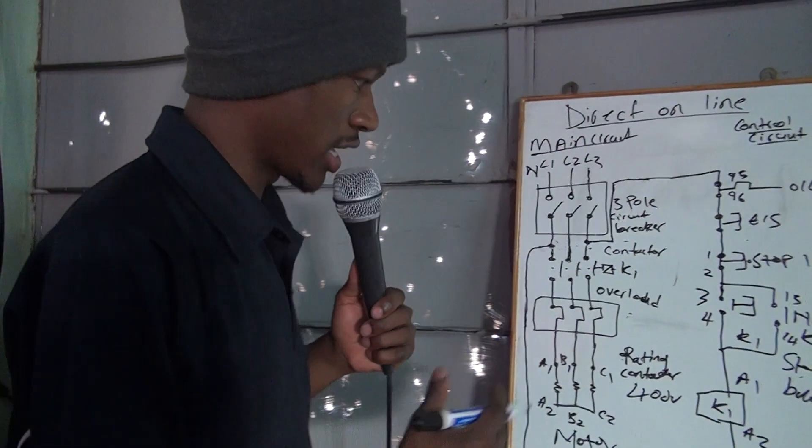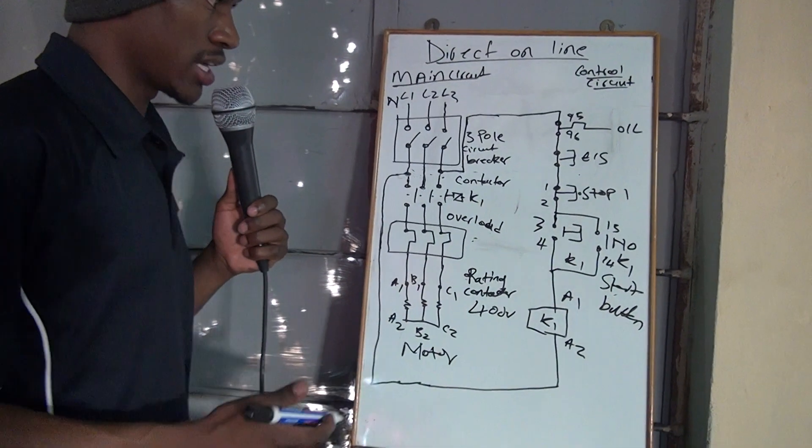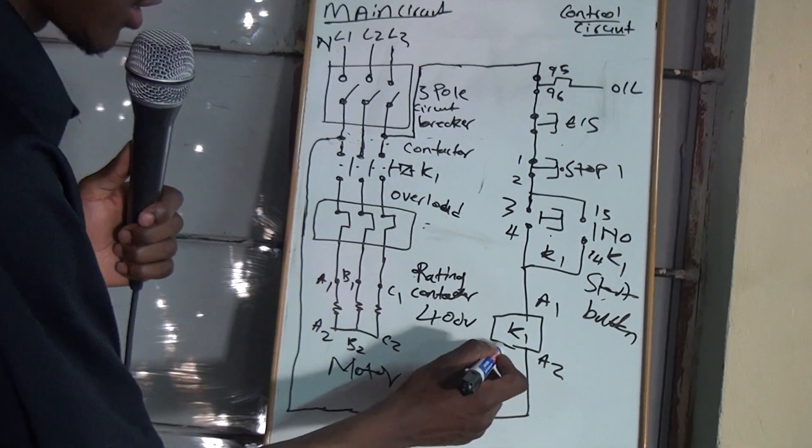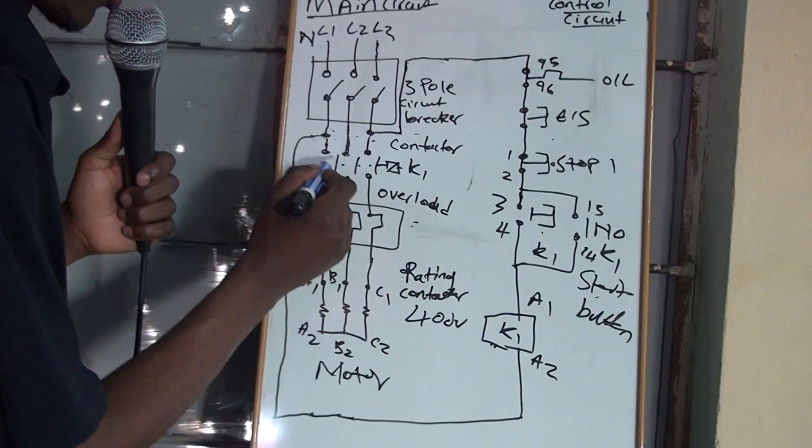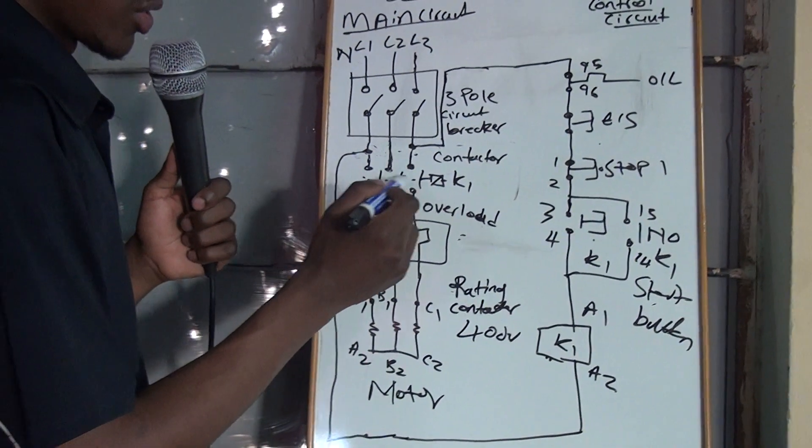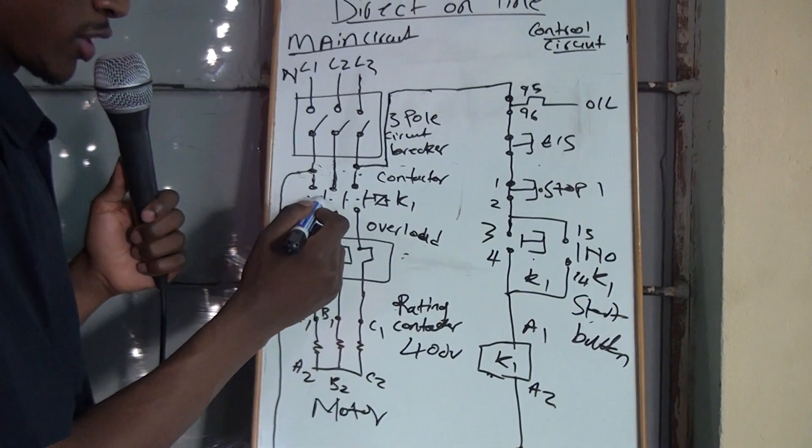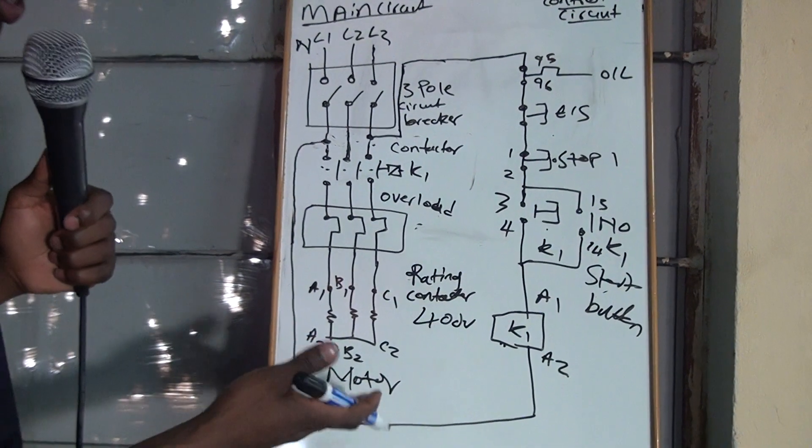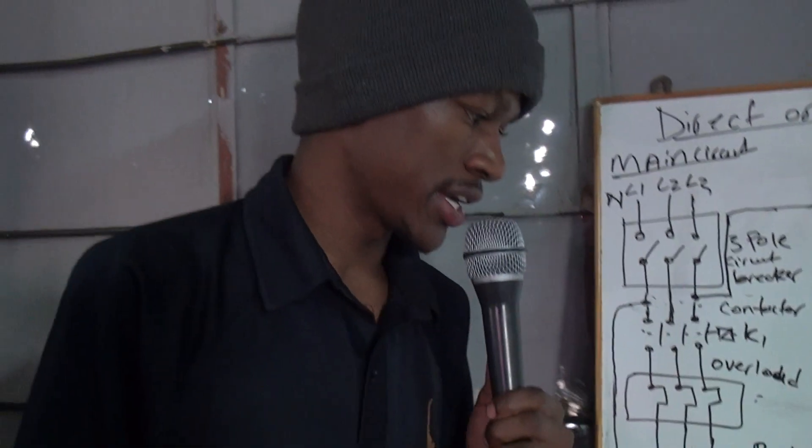That's how you draw your direct online. And it works in such a way that when you press your start button, the coil energizes. And when the coil energizes, the contacts close. Instead of becoming normally open, now they become normally closed. Then your motor now can run.